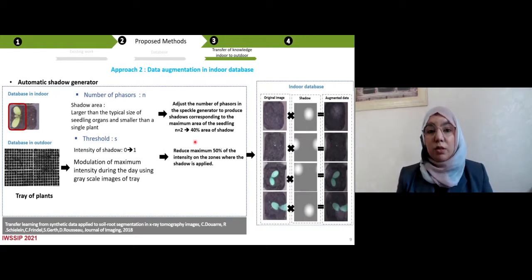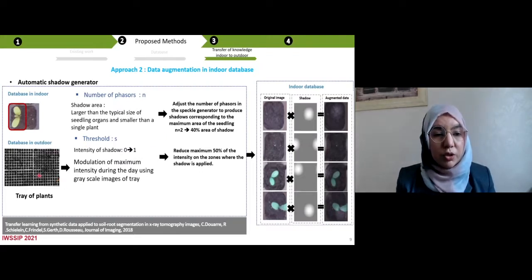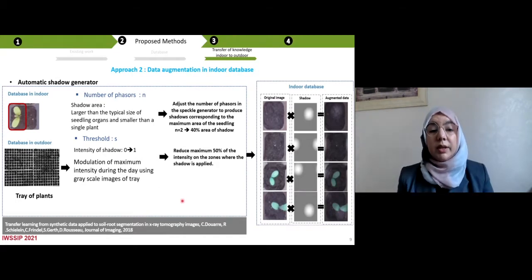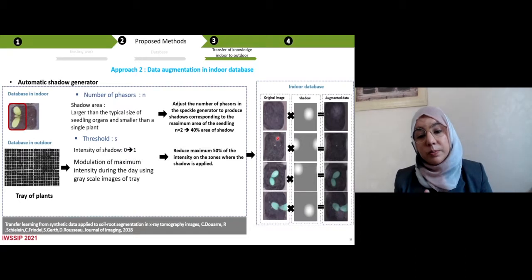And the second parameter is the threshold. So it represents the maximum intensity of shadow. So the value of this threshold is between 0 and 1. So to get this value, we apply a modulation of maximum intensity during the day in outdoor dataset using grayscale images. So and we conclude we can maximum reduce 15% of the intensity in the zone when we apply shadow. And after that, each image in indoor database is spatially modulated by the generated shadow with simply multiplication.